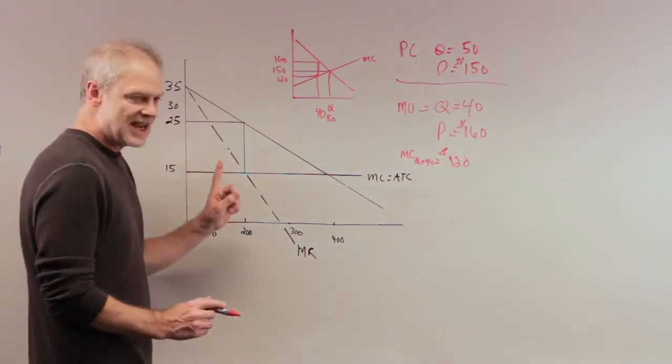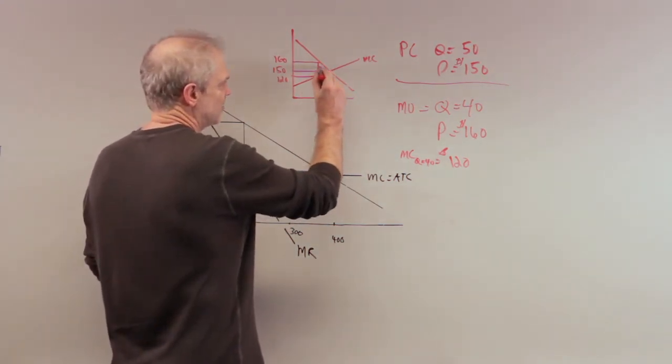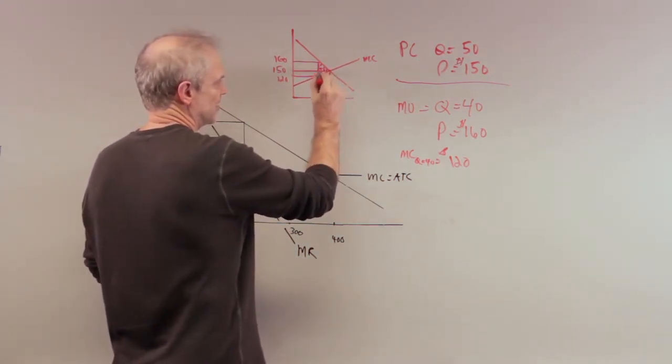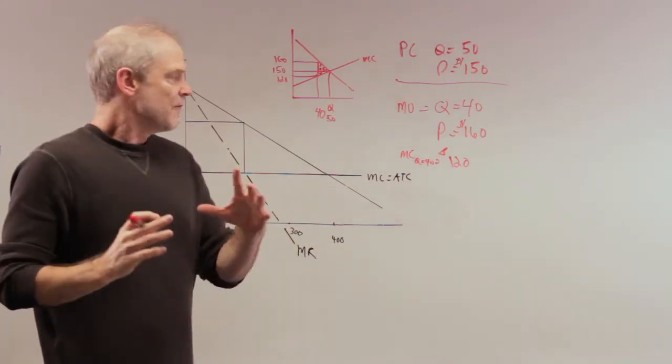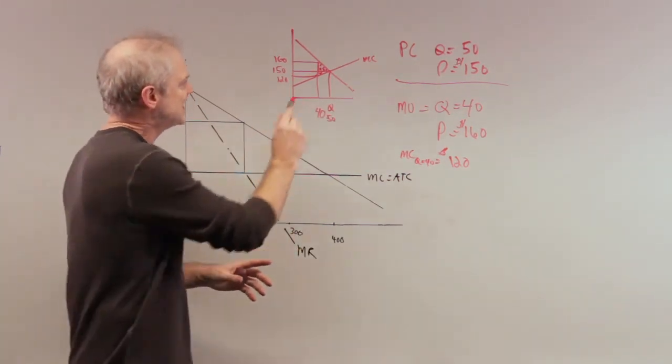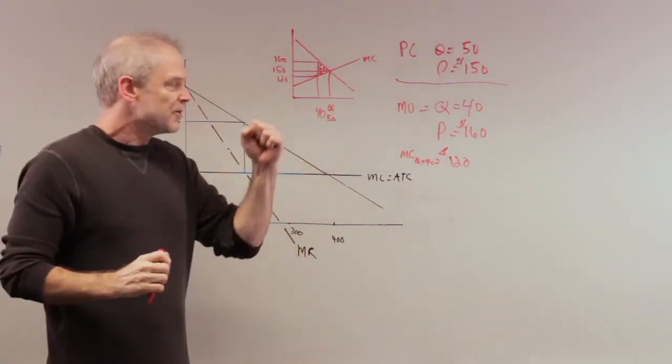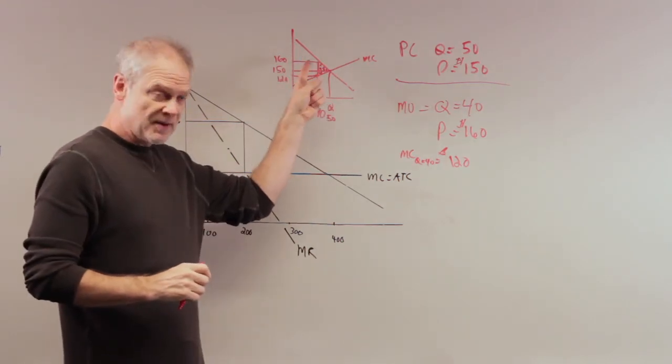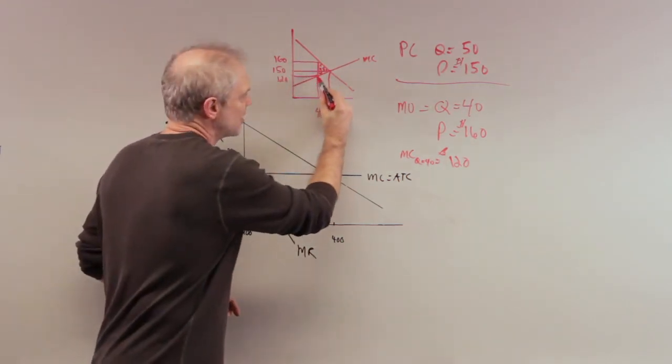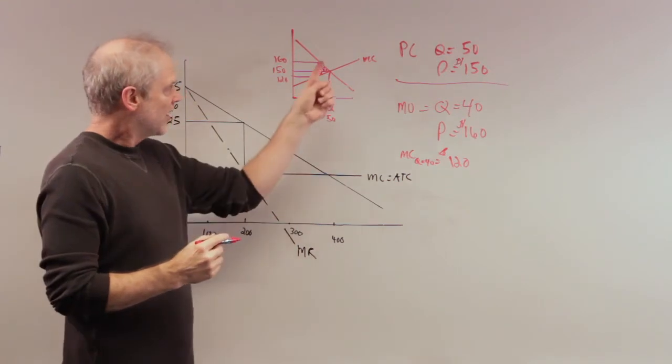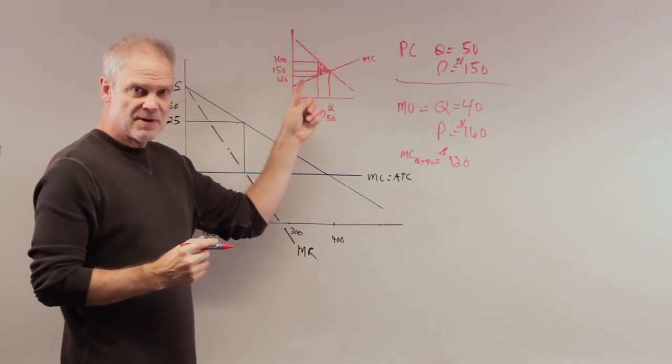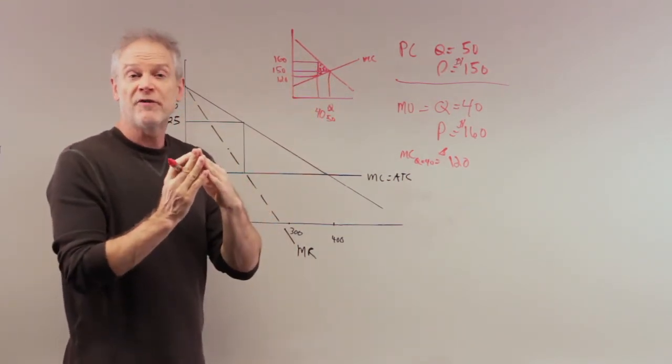In other words, by deadweight loss, we mean that these transactions that I'm putting all these dots into, these transactions don't occur, right? This is the value of people's willingness to pay by the demand curve, and the willingness of the marginal cost of producing it, where people's willingness to pay exceeds the marginal cost, that is what we call welfare enhancing.